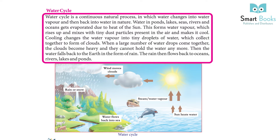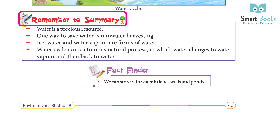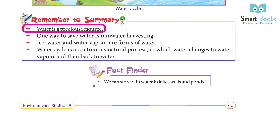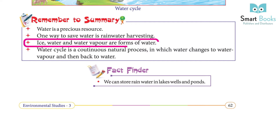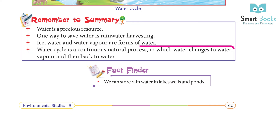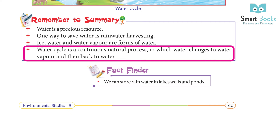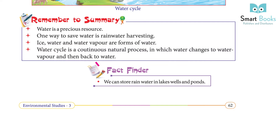Then the water falls back to the Earth in the form of rain, which flows back to oceans, rivers, lakes, and ponds. Summary: water is a precious resource. One way to save water is rainwater harvesting. Ice, water, and water vapor are forms of water. The water cycle is a continuous natural process in which water changes to water vapor and then back to water.